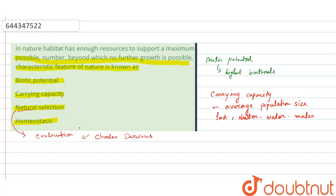That thing is known as natural selection. Next, the term here is homeostasis. So homeostasis is also a part of biology. It is the state of a steady internal physical and chemical condition which is